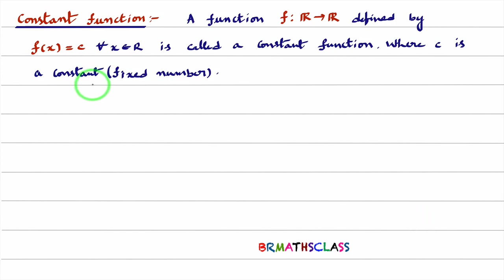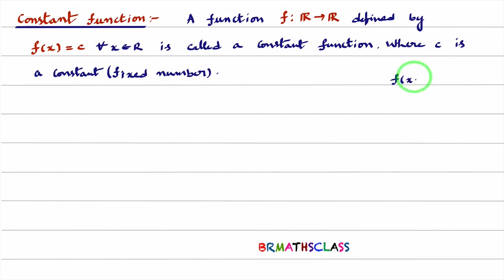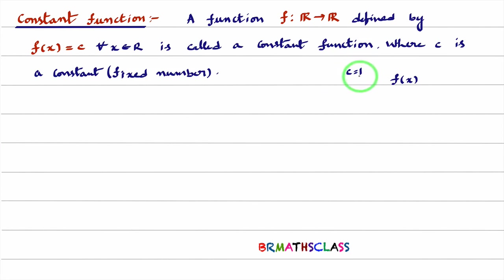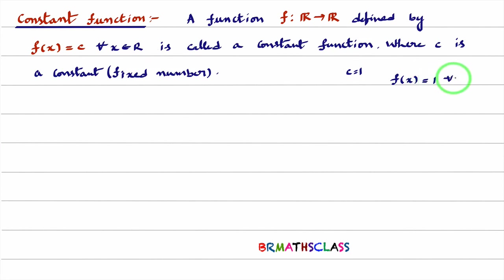What does constant mean? Constant means it is a fixed number. For example, I fix c = 1. I take this c value as 1. Then f(x) = 1 for any x belonging to R.